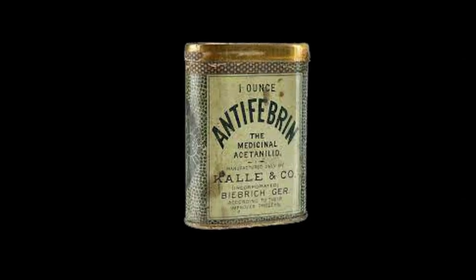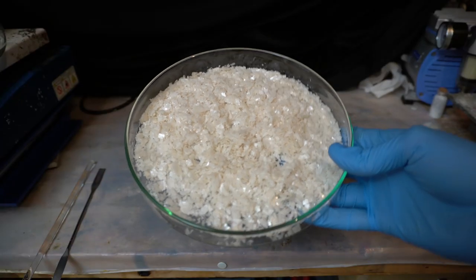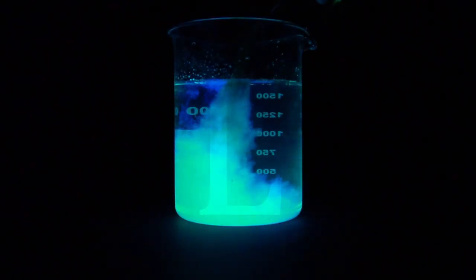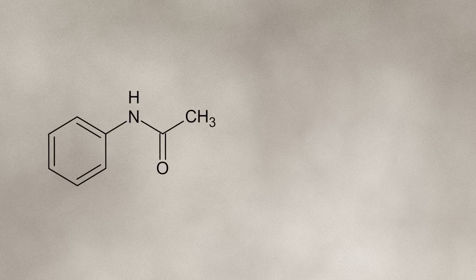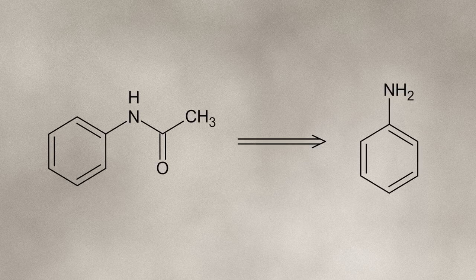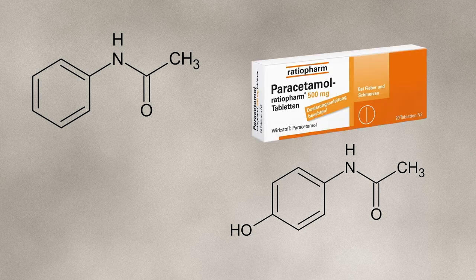Today we'll be making a useful chemical precursor which was also used as a pain medicine. On top of that, it'll also be the very first crystals on this channel. This synthesis is going to be rather simple. We'll be making acetanilide from aniline. This compound has a few interesting applications — for one, its structure is very similar to a well-known pain medication: paracetamol.